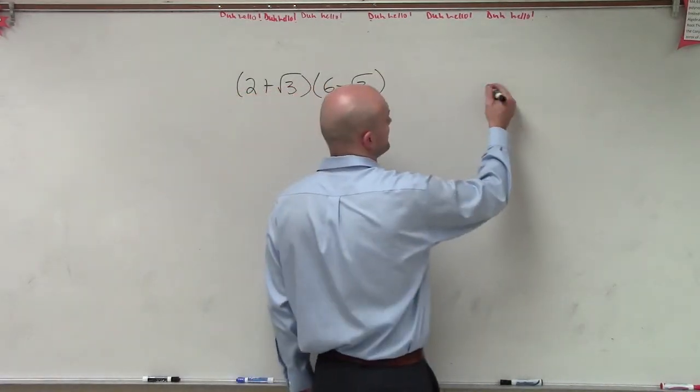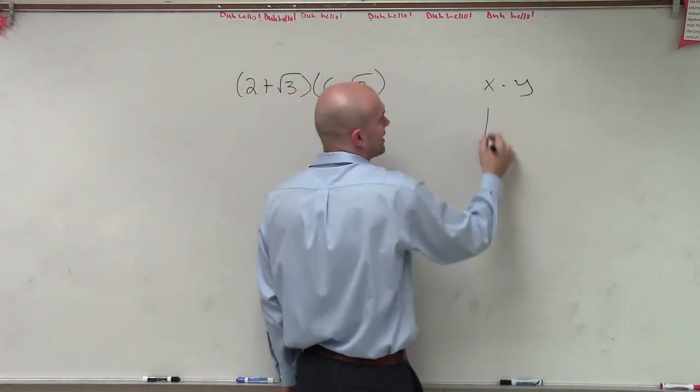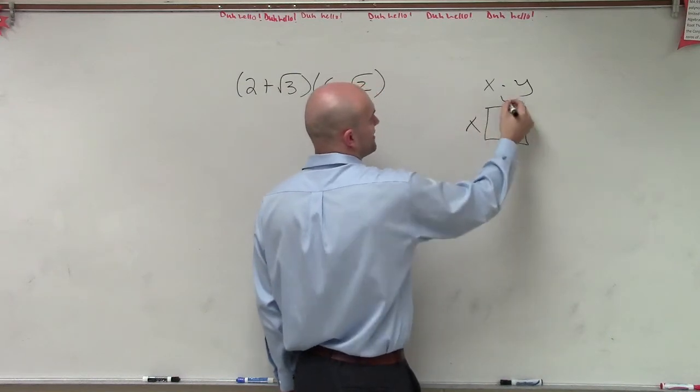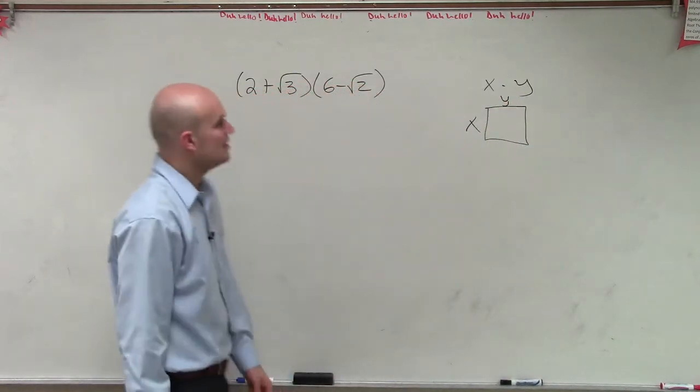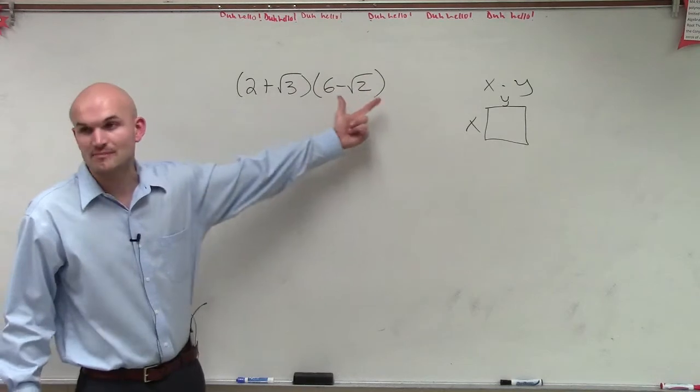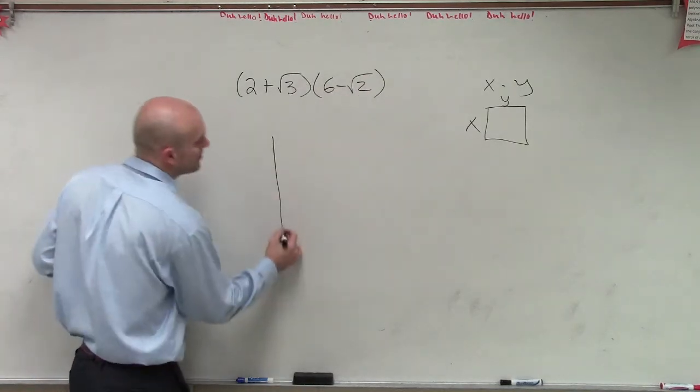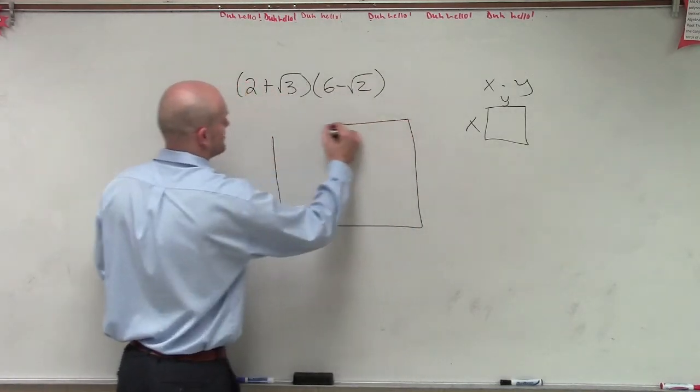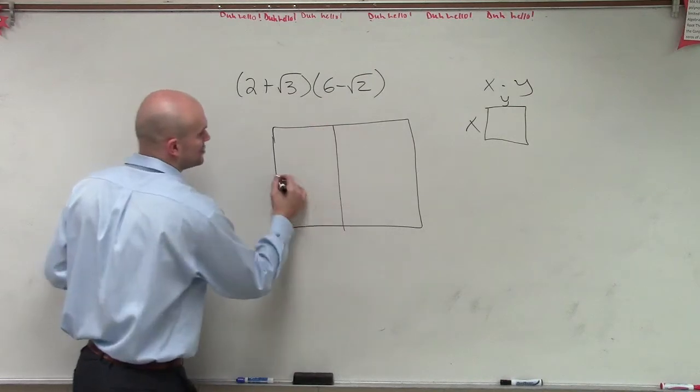Now, remember, if I had like x times y, you can create a box for this. If I wanted to find the area, a lot of times we use a rectangle. But notice we have a binomial times a binomial. So when I apply the rectangle form of this, I'm going to have two terms.